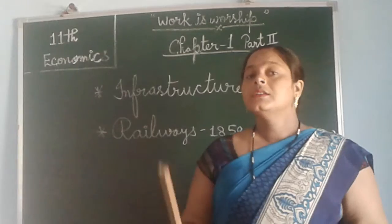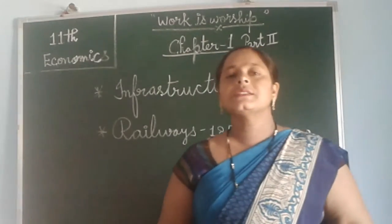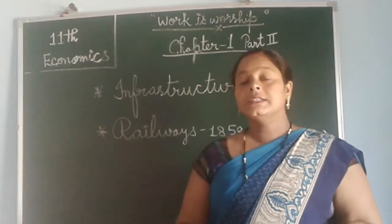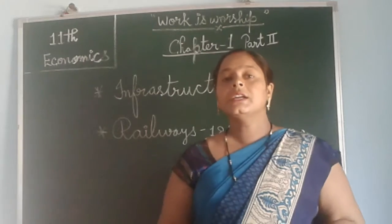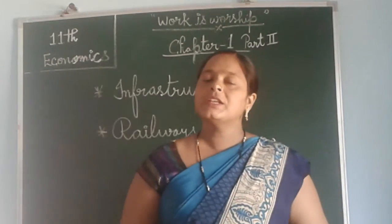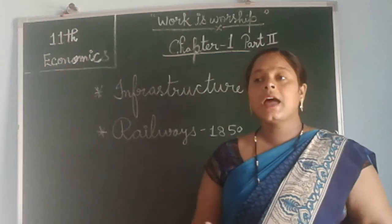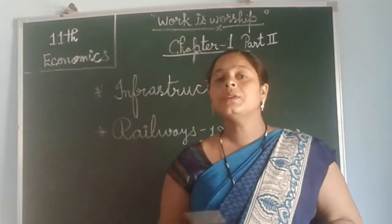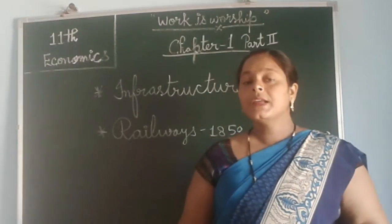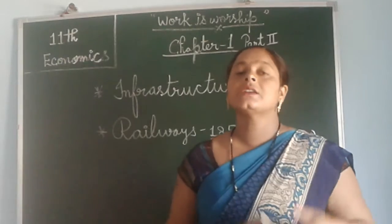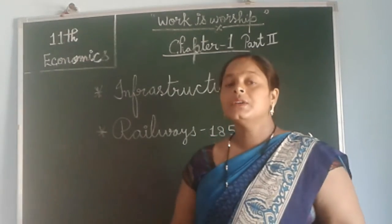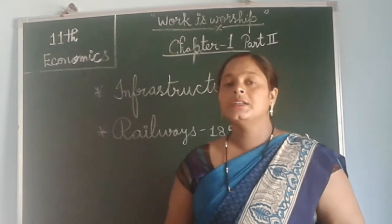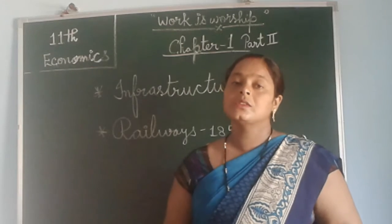To sum up this chapter: whatever the British had done in India, they earned much more from India. They got benefit over two centuries. They used India's natural resources and people as human power for their own benefit. And after that, Indians also became aware and became educated, and started developing. But at that time, India's situation was not so good.